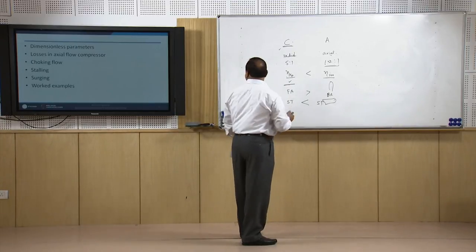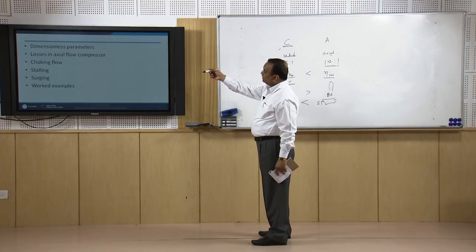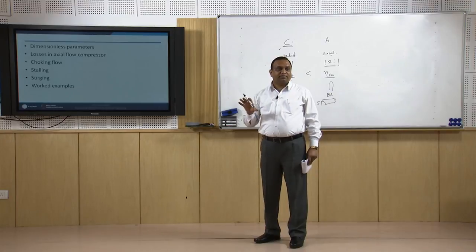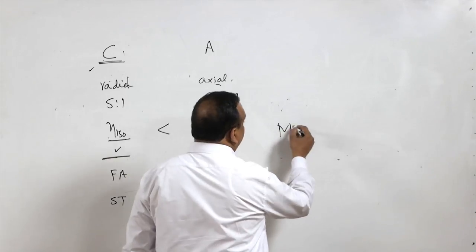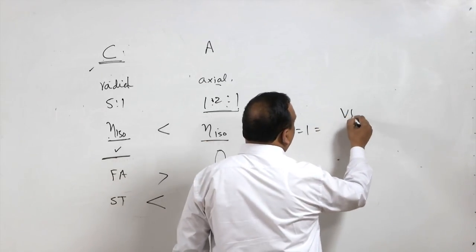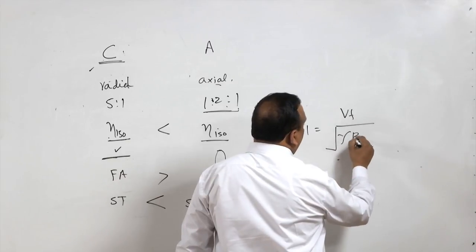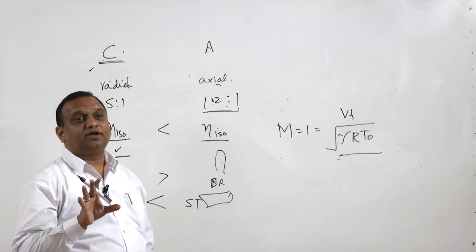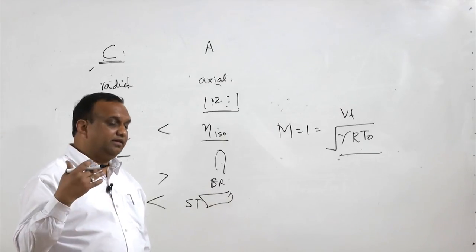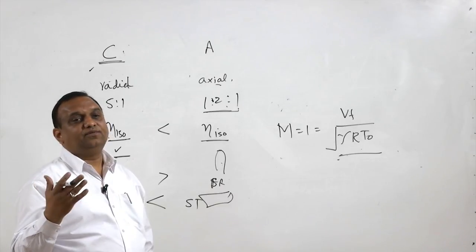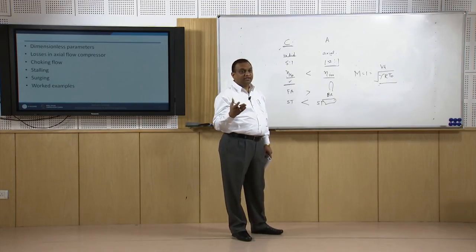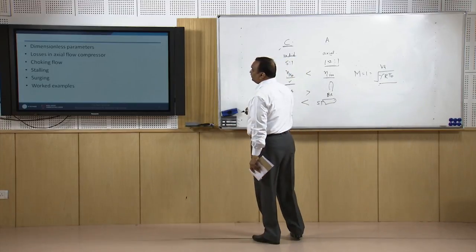Before the numerical example, we briefly discuss choke flow, which we have already covered for centrifugal compressors. During flow inside the compressor, the velocity should not exceed Mach 1, i.e., Vf divided by √(γRT) should not reach 1. If the flow becomes supersonic, shocks may occur, incurring energy losses and physically damaging the compressor. It must be ensured that choke flow does not take place inside the compressor.